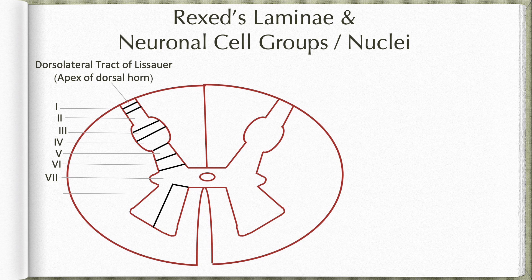Lamina 8 occupies the ventral horn. It spans the entire breadth of the ventral horn in thoracic segments, but wherever there is limb enlargement lamina 8 is pushed towards the medial half. It is mainly a mass of propriospinal neurons which are interneurons. They receive inputs from various adjacent laminae and also from contralateral lamina 8, and they influence motor neurons — either alpha motor neurons or muscle spindle through gamma fibers.